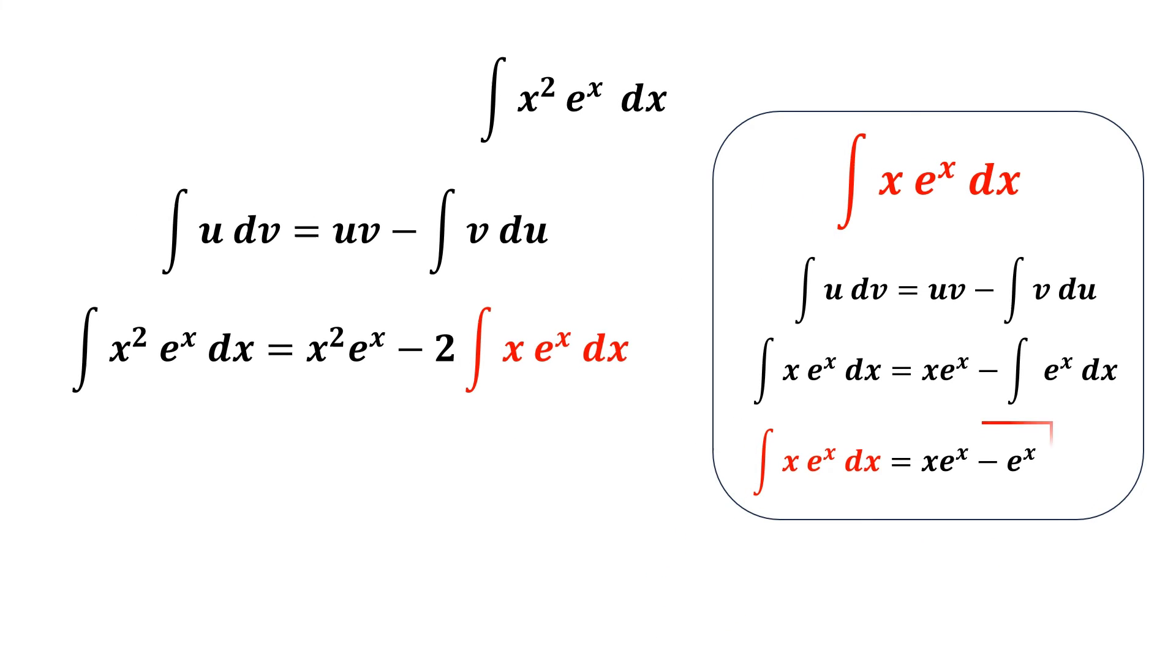Now, all we can do is take this answer and substitute it into the integral. So, we have x squared e to the x minus 2 multiply with the answer of the integral. And we're done. But remember, don't forget to add plus C after we have finished the integration and we got our final answer.